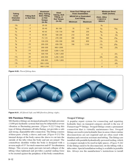MS flareless fittings are designed primarily for high-pressure (3,000 psi) hydraulic systems that may be subjected to severe vibration or fluctuating pressure. Using this type of fitting eliminates all tube flaring, yet provides a safe and strong, dependable tube connection. The fitting consists of three parts: a body, a sleeve, and a nut. The internal design of the body causes the sleeve to cut into the outside of the tube when the body and nut are joined. The counterbore shoulder within the body is designed with a reverse angle of 15 degrees for steel connectors and 45 degrees for aluminum fittings. This reverse angle prevents inward collapse of the tubing when tightened and provides a partial sealing force against the periphery of the body counterbore.